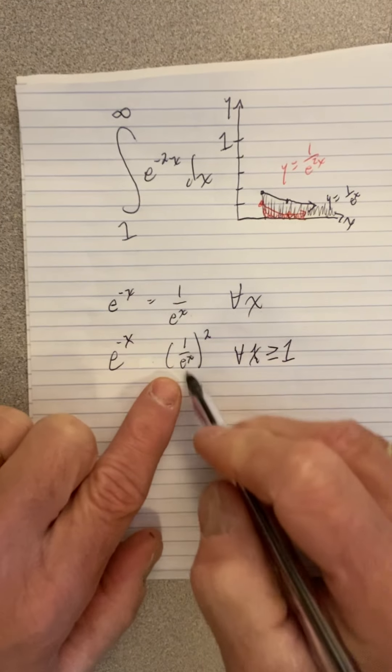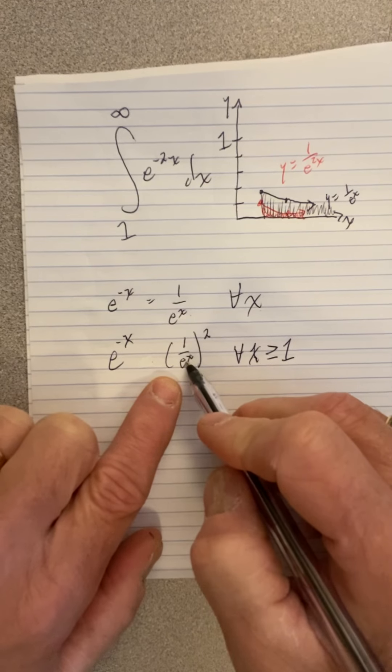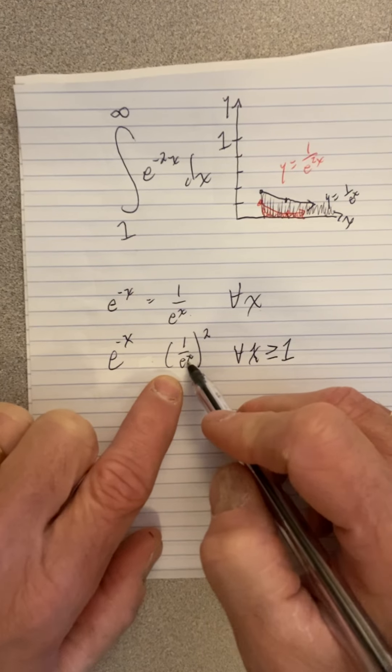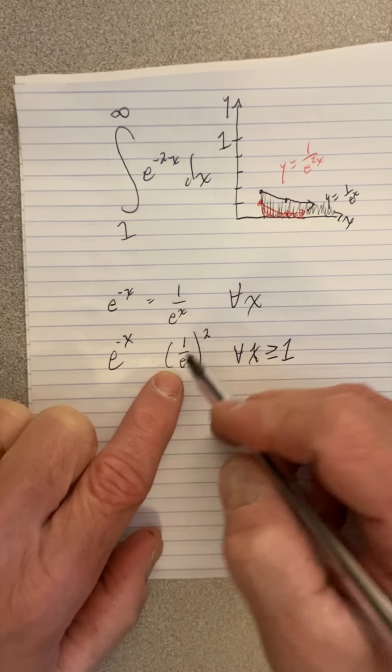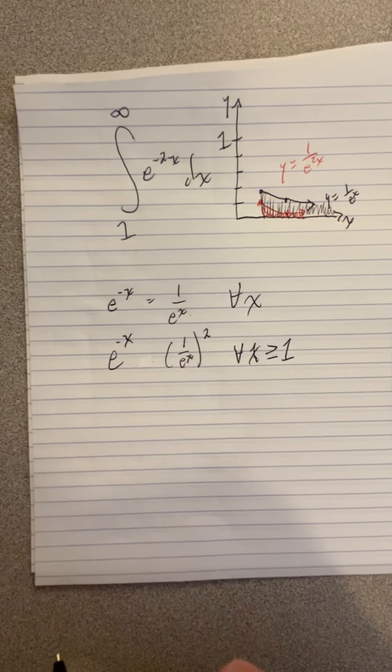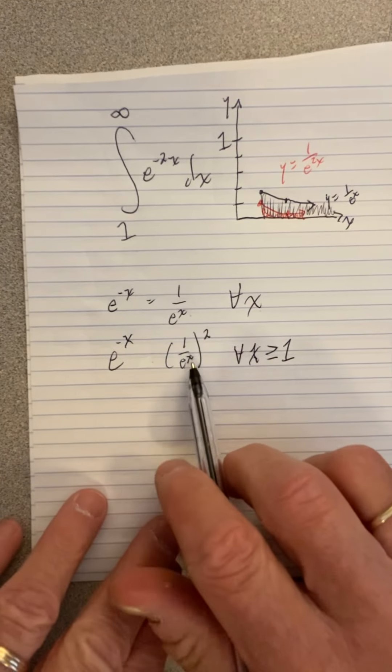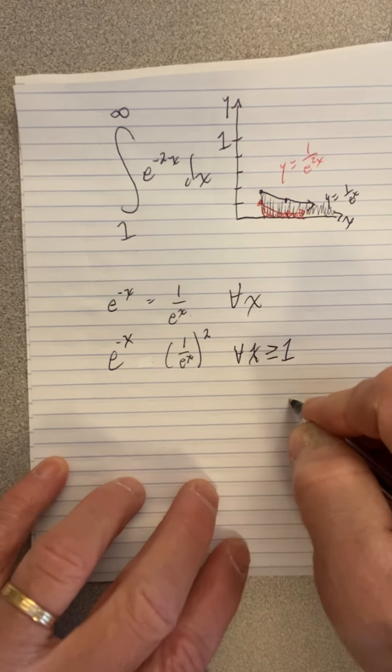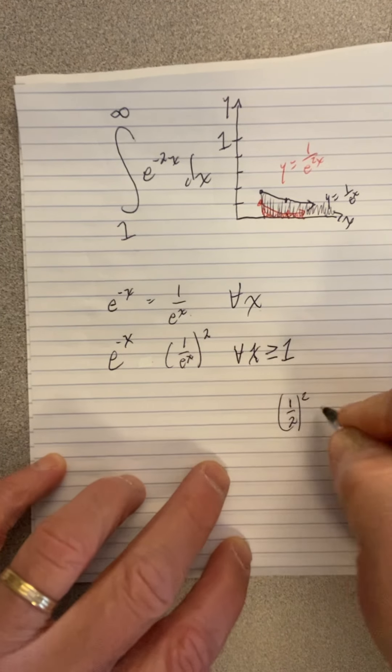1 over e is a proper fraction where the denominator is larger. And 1 over e squared is a proper fraction where the denominator is smaller. So, when you square fractions, like 1 half, if you square it, it gets smaller.